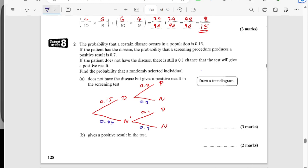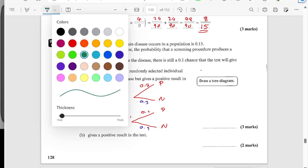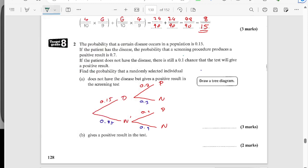So that does not have the disease, it's a positive result in the screening test. So we're looking at this branch here, which is going to be 0.85 times 0.1, which is going to be 0.085.